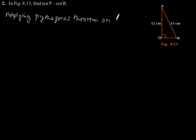Applying Pythagoras theorem on triangle PQR, we will get PR² = PQ² + QR².